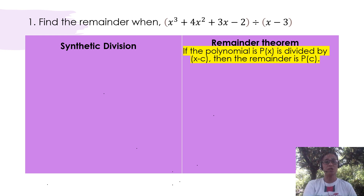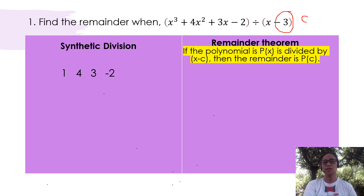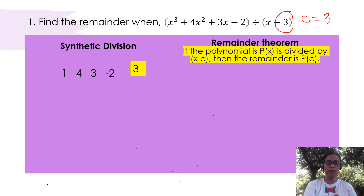List all the coefficients of the dividend in a row: 1, 4, 3, and negative 2. Then let us determine the constant that we are going to write in a separate box. In our divisor we have x minus 3, so therefore the constant will be equal to positive 3. We write 3 in a separate box. Now let's proceed to synthetic division.